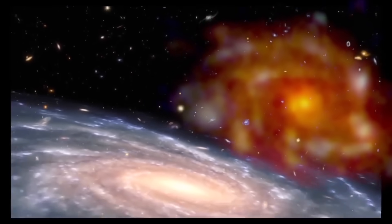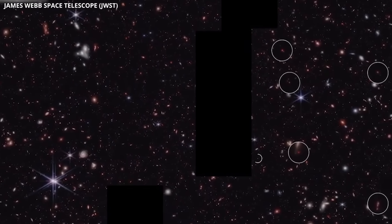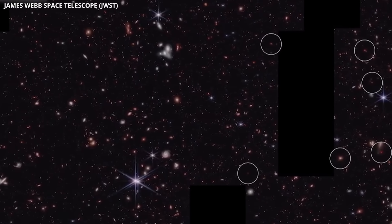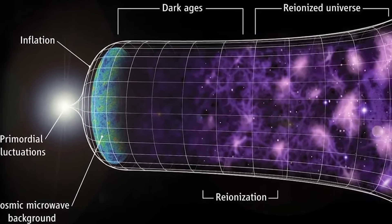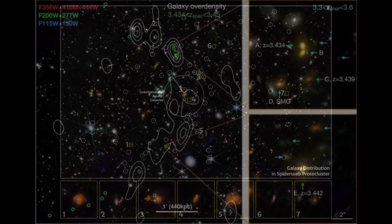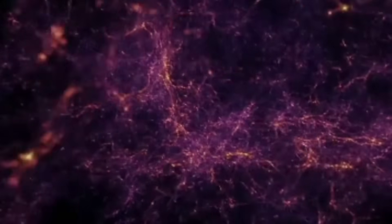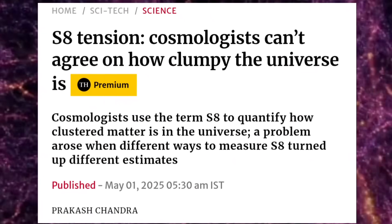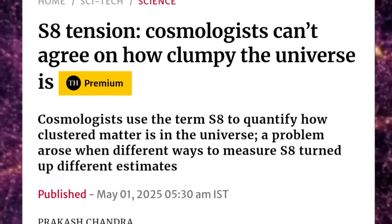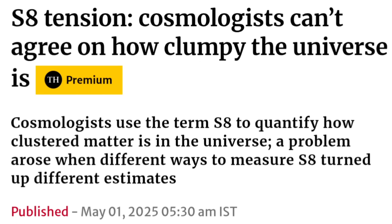But wait, those distant galaxies aren't the only problem. The James Webb telescope has also revealed something even stranger happening in the universe, something that dark matter can't explain. Scientists have discovered that the largest cosmic structures in the universe, like galaxy clusters and vast filaments, seem to have formed differently than we previously thought. This mystery has become one of the biggest puzzles in modern cosmology, and scientists refer to it as the S8 tension.